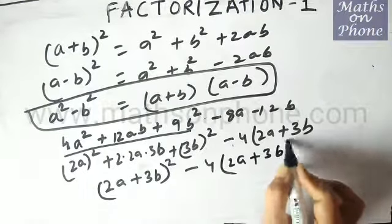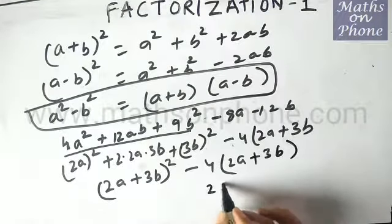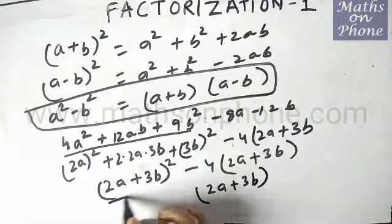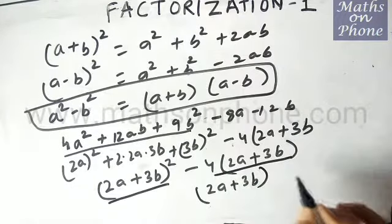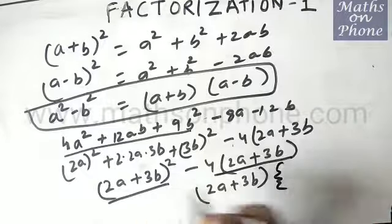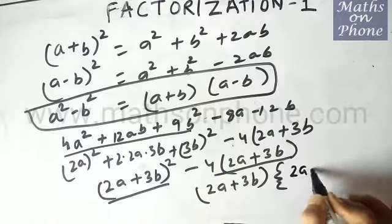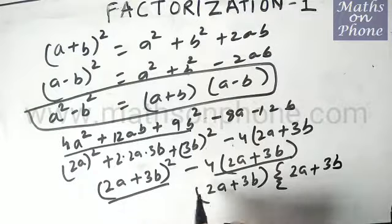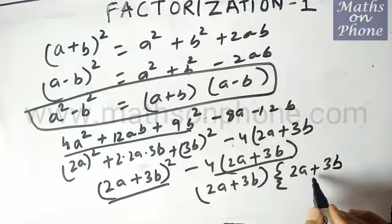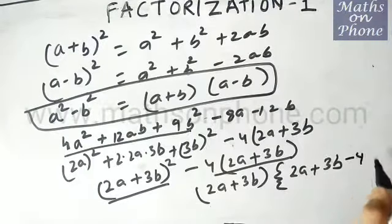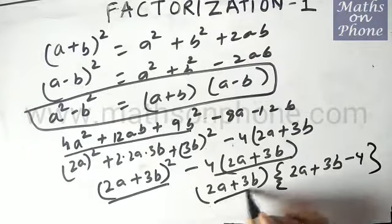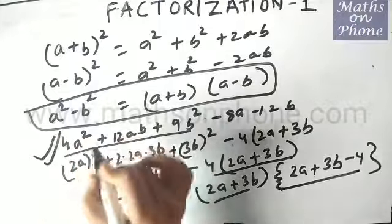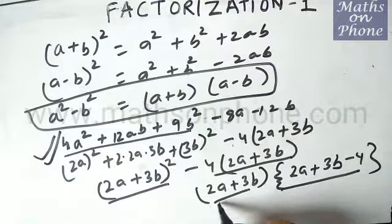So we can write this as (2a + 3b)² - 4(2a + 3b). Now taking (2a + 3b) as common from both terms, we are left with (2a + 3b)·[(2a + 3b) - 4]. So we have factorized the given expression into this product format.